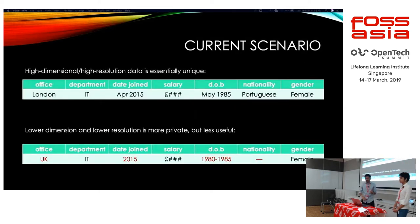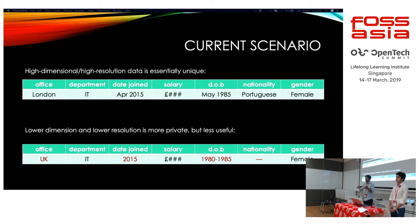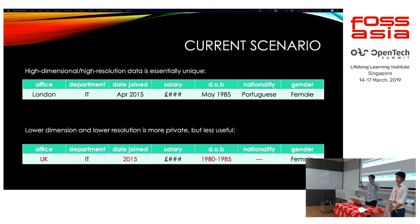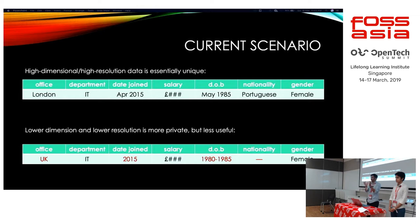High-dimensional and high-resolution data is essentially unique. If you find someone whose office is in London, working in the IT department, with a date of joining, a salary, and a date of birth — the more dimensions you have, the easier it is to drill down and find out which person it might be. With lower dimension or lower resolution data, if you are aggregating something, it is more private because it is difficult to find out a person.